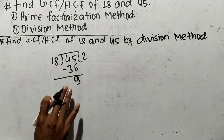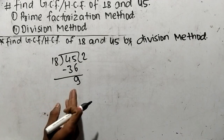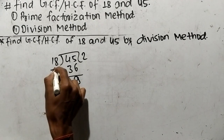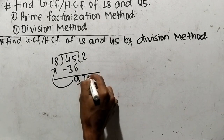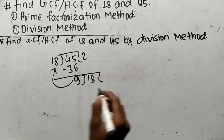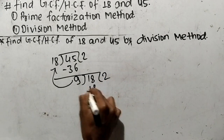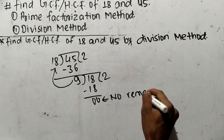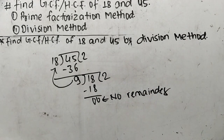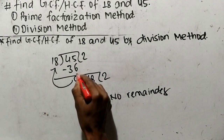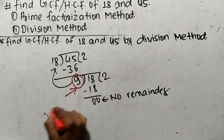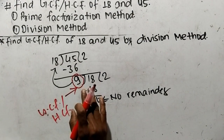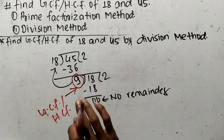When the remainder 9 comes, we then divide the divisor by the remainder. So 9 divides 18: 9 times 2 equals 18, and at last we have no remainder. Since no remainder is produced, the divisor 9 becomes the GCF or HCF.